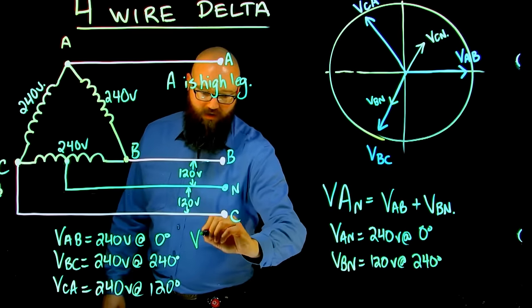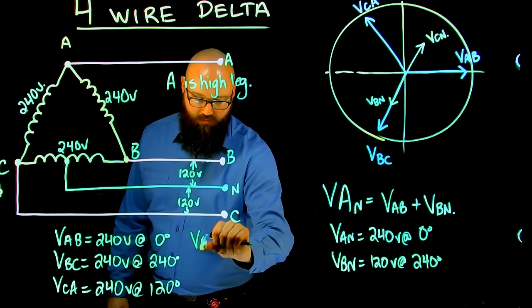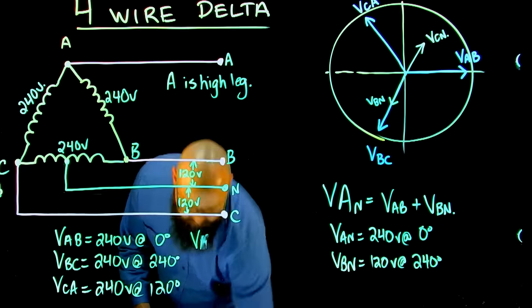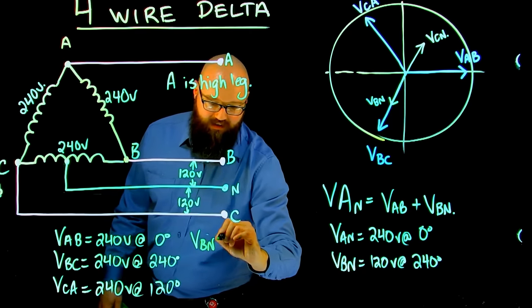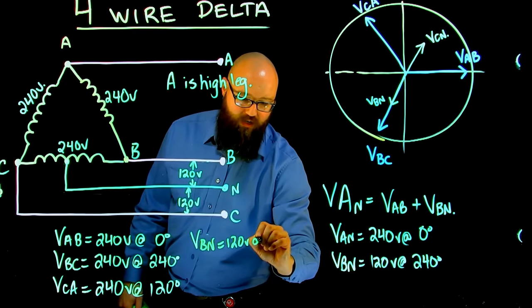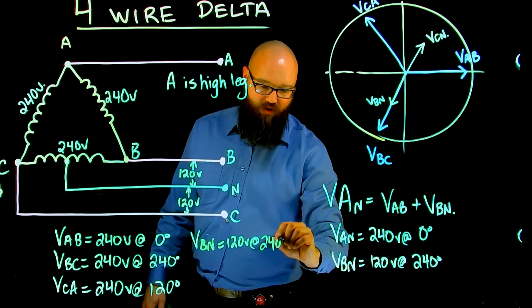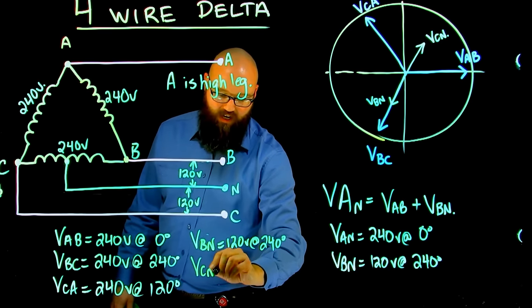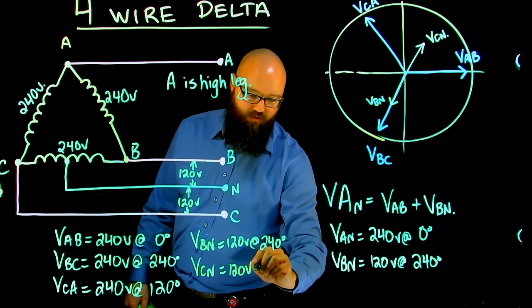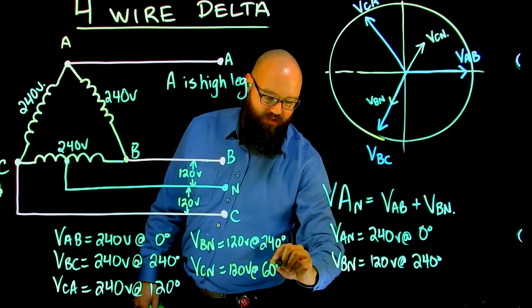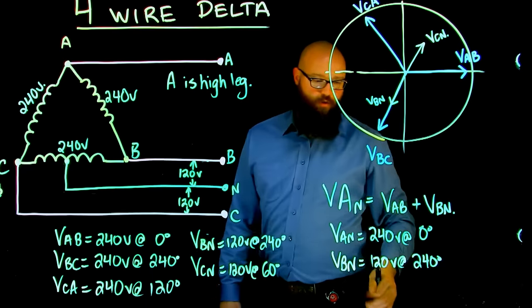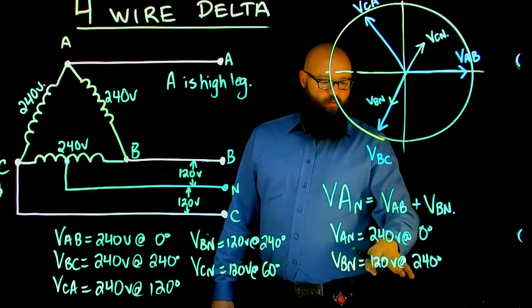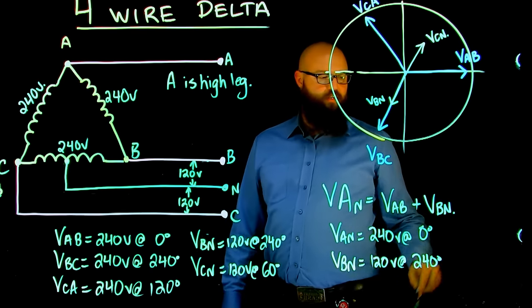I'm going to write these here. V B to N, 120 volts at 240 degrees. V C to N equals 120 volts at 60 degrees, or 180 degrees out of phase from my B to N. So V B to N, 120 volts at 240 degrees.